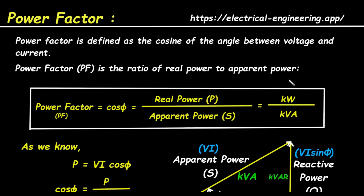Let's look at the formula. The power factor, or PF, is equal to the cosine of the angle Φ. This ratio is calculated by taking the real power, denoted by the letter P, and dividing it by the apparent power, denoted by the letter S. Real power is the power that actually does work, and it's measured in kilowatts, or kW. Apparent power is the total power in the circuit, which is the vector sum of real and reactive power, and it's measured in kilovolt amperes, or KVA.